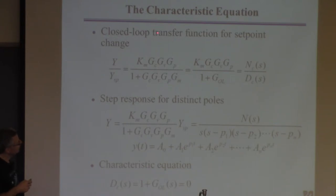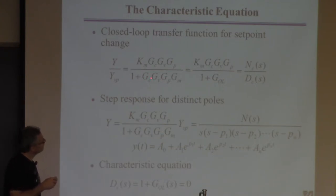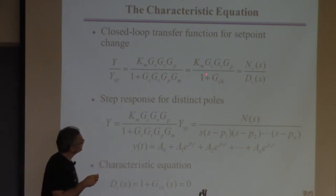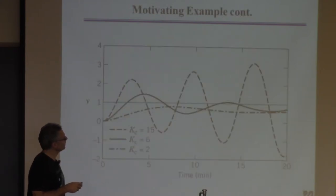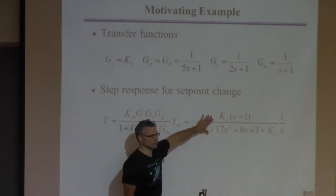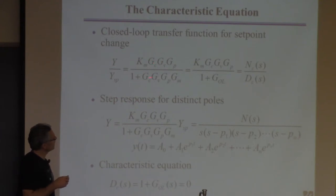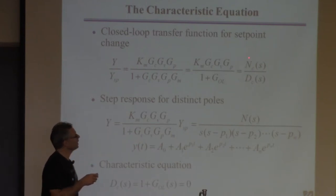This is the basis for the methods I'm about to show you. We have the closed-loop transfer function. The four transfer functions multiplied together — controller, valve, process, measurement device — we call G_OL for open loop. You can write this as a ratio of two polynomials: numerator N_C over denominator D_C. For any problem, you multiply it all out and get that ratio.